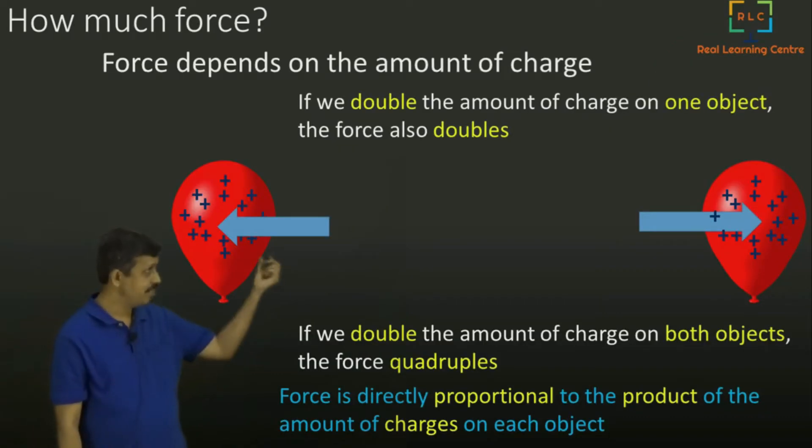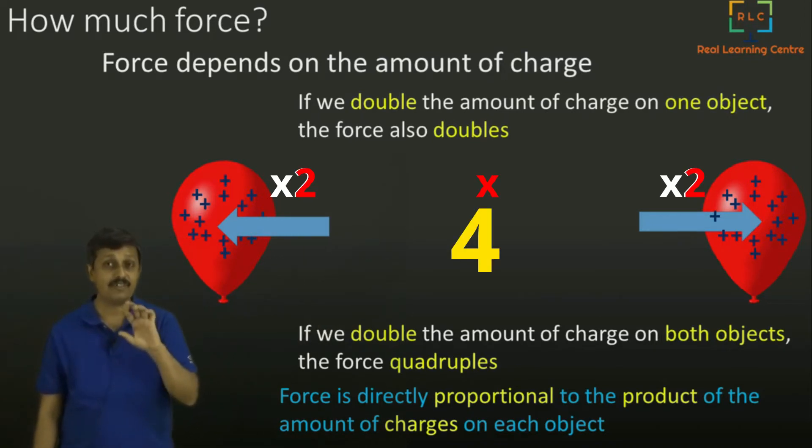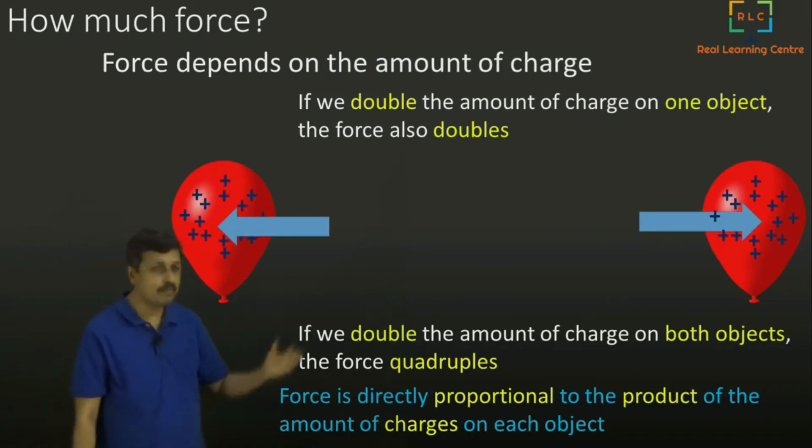Because we doubled here and we doubled there. That two, that two, if you multiply, you get four. That is why we say product. If I actually doubled it here and made it three times on the other one, this is two, that is three.